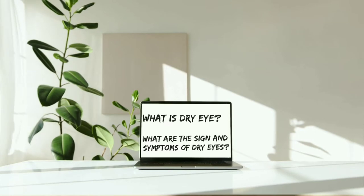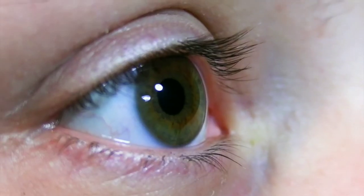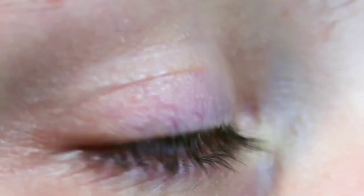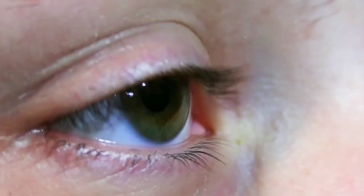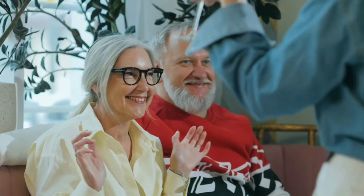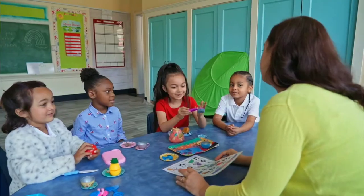What is dry eye? What are the signs and symptoms of dry eyes? The condition in which a person doesn't have enough quality of tear to lubricate and nourish the eye is known as dry eye. If your eye produces a poor quality of tear, instability leads to inflammation and damage of the eye surface. Dry eye is a common and chronic problem mostly in older adults, but nowadays it's becoming common in young people and even in children.